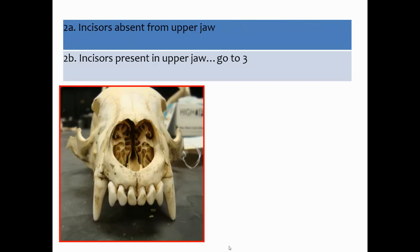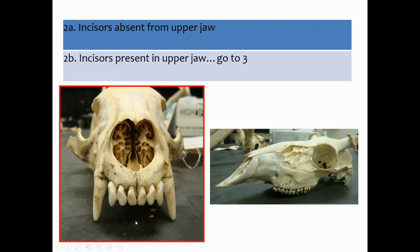The next couplet is: incisors absent from the upper jaw, or incisors present in the upper jaw. First you have to know what an incisor is — those are the teeth in the front. If they're absent, you're done; if they're present, you go to three. Our animal has incisors present in the upper jaw, so we're going to three.